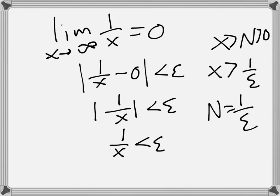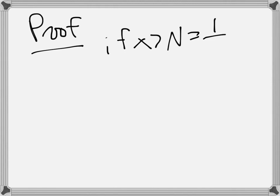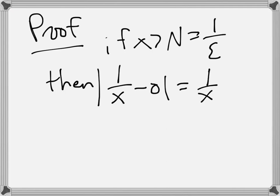To actually do the proof: if x is greater than N = 1/epsilon, then |1/x − 0| = 1/x, and that's going to be less than epsilon, because if x is greater than 1/epsilon, we flip both sides and flip the inequality from greater than to less than. And that completes that proof.